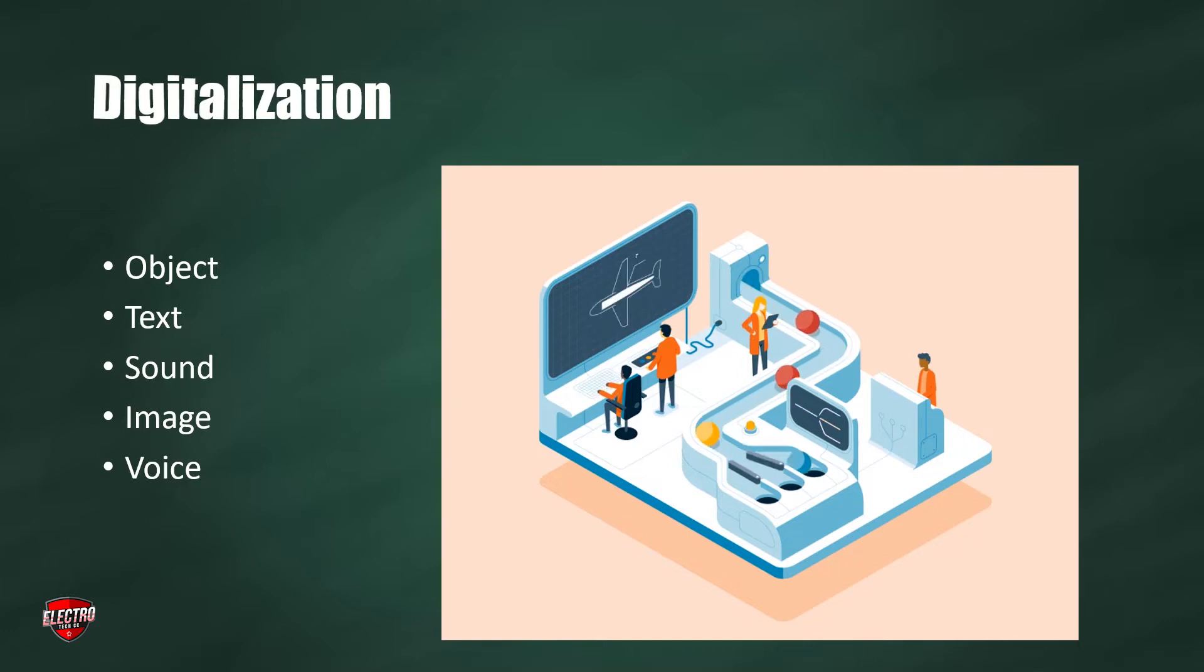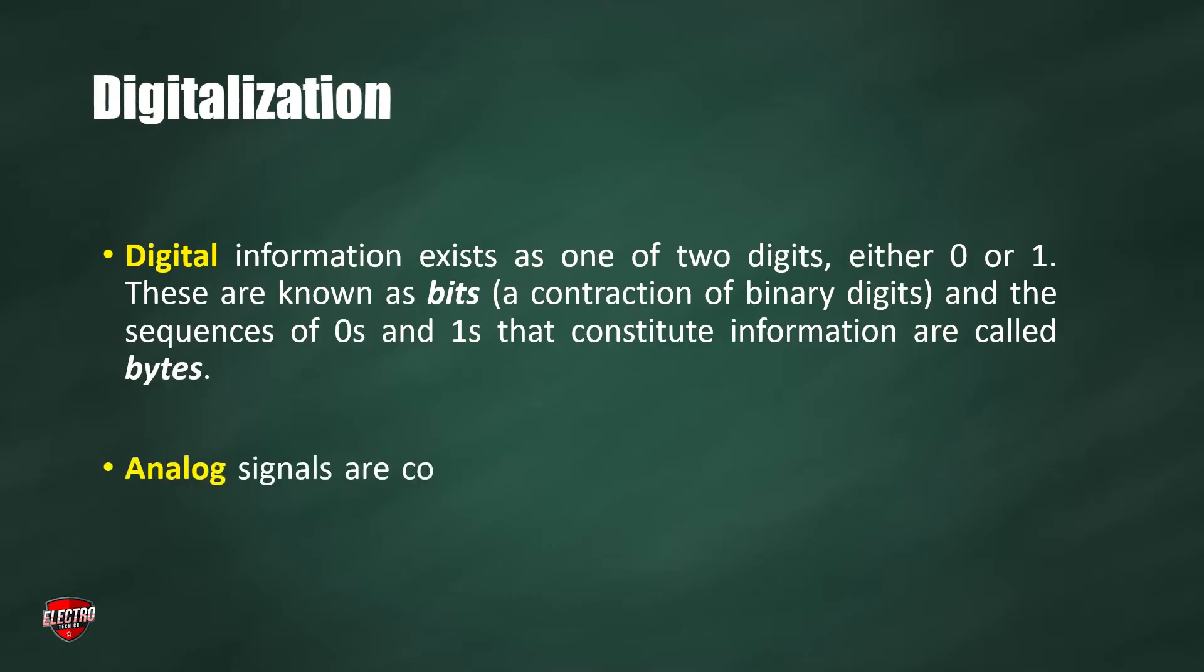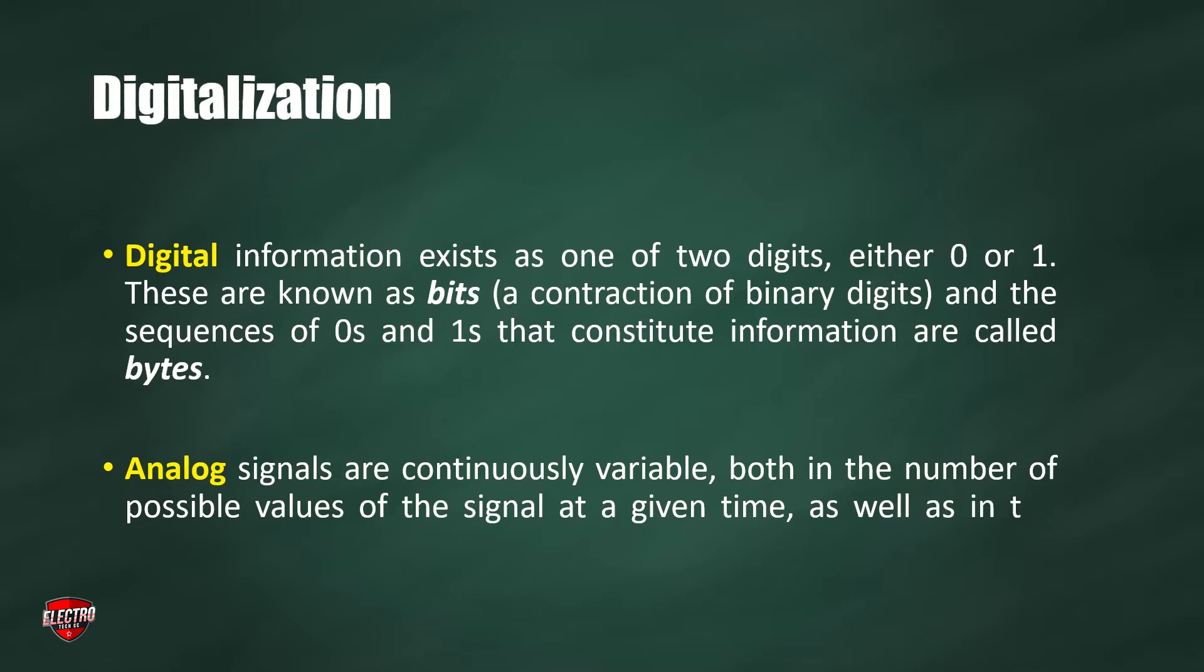So let us discuss analog signal and digital signal. Digital information exists as one of two digits, either zero or one, thus are known as bits. The sequence of zeros and ones that constitute information are called bytes.